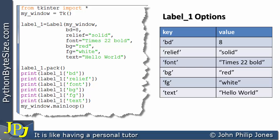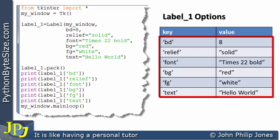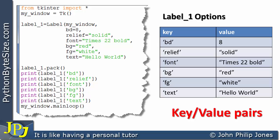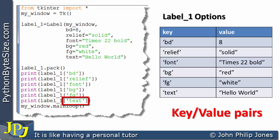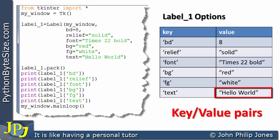So we can see all of the options shown here are appearing in this table, and of course what we're dealing with here are key-value pairs. Now it is possible to get at the value associated with each key-value pair by using the key. If I look at this line here, I'm referring to label one, and within the square brackets I've got the word 'text' in quotes — that is the key shown in the table — and over here you can see the value 'hello world'.